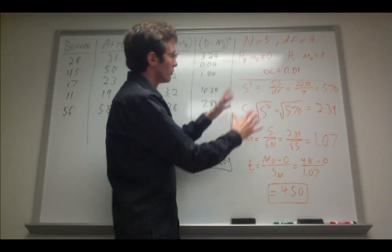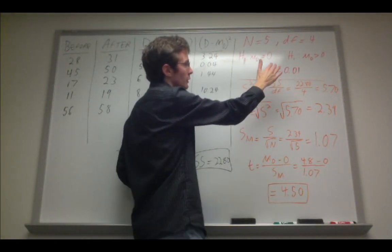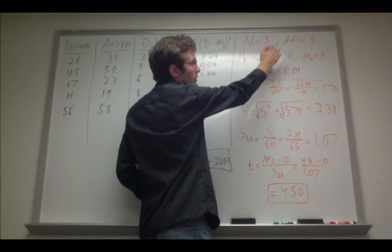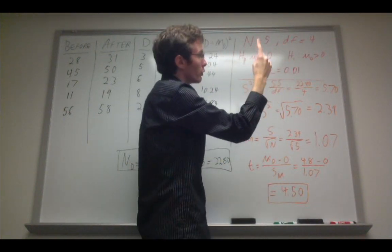Alright, so I'm going to cover this very briefly. I have some of my parameters written up here in statistics. So there are five subjects. Degrees of freedom is n minus 1, or 4.